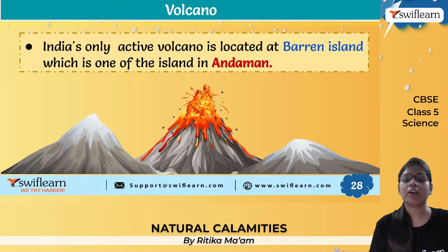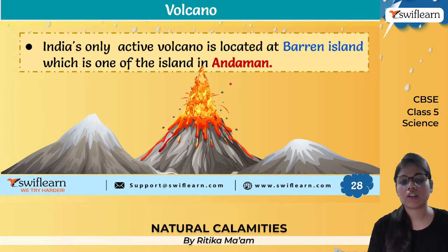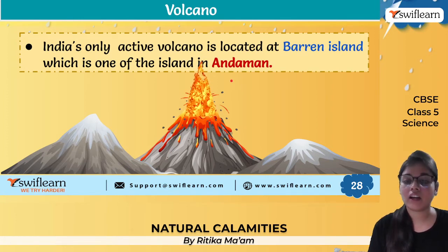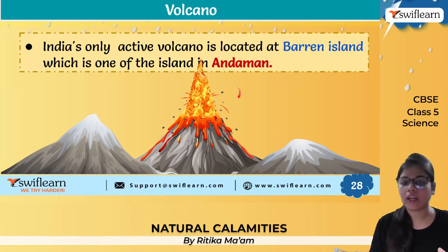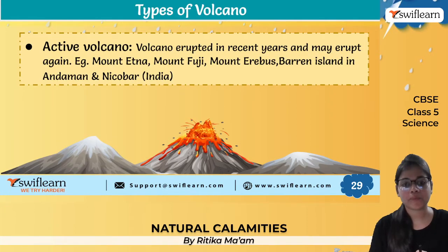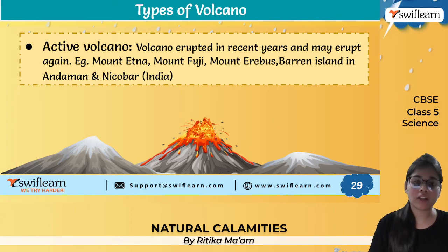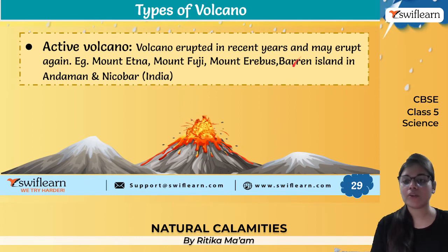There are different types of volcanoes. Barren Island, located in the Andaman Islands, is the only active volcano in India. An active volcano can erupt at any point of time and generally keeps erupting. Some active volcanoes in the world include Mount Etna, Mount Fuji, Mount Erebus, and Barren Island in Andaman and Nicobar.